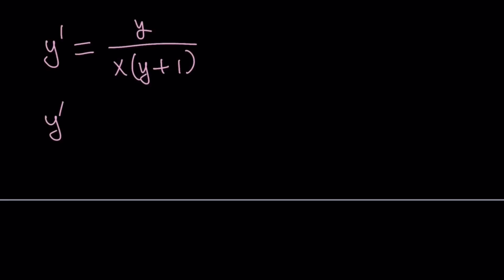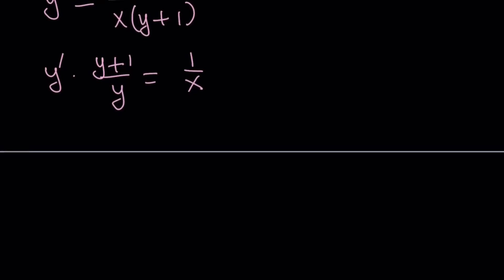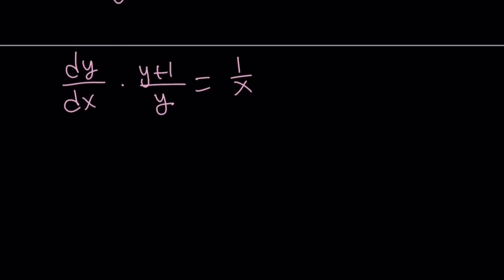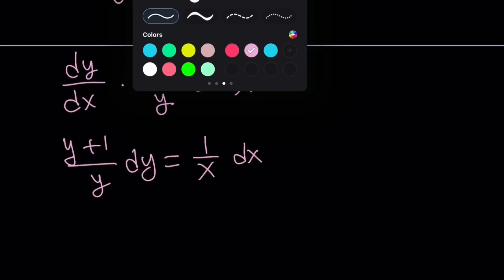So let's go ahead and write it this way. y prime times y plus 1 over y equals 1 over x. And then obviously I do want to write the y prime as dy over dx, so I can turn this into a separable differential equation. So I can write it as dy over dx times y plus 1 over y equals 1 over x. And then finally, we want to multiply both sides by dx. So we can write it as y plus 1 over y dy equals 1 over x dx. At this point, the variables are separated.